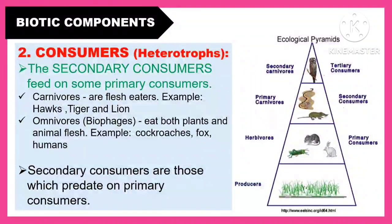The secondary consumers feed on some primary consumers. The carnivores are flesh-eaters. Examples are hawks, tiger, and lion. Then omnivores eat both plant and animal flesh. Examples are cockroaches, foxes, and humans. Secondary consumers are those which predate on primary consumers.